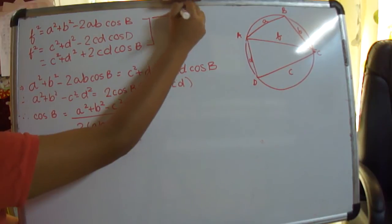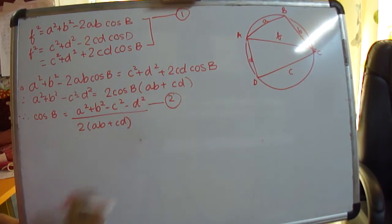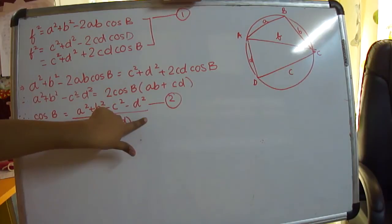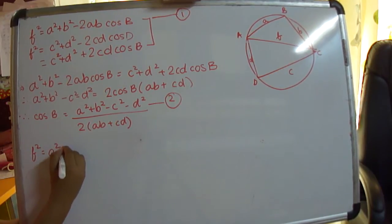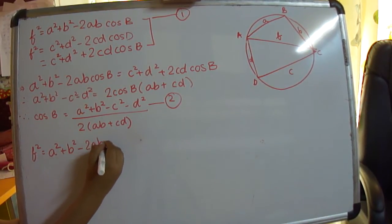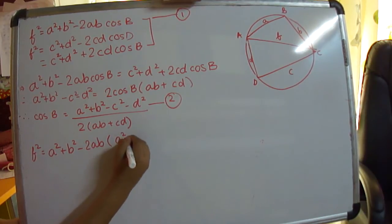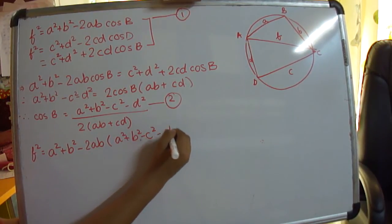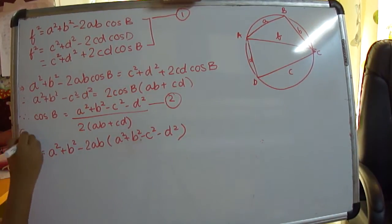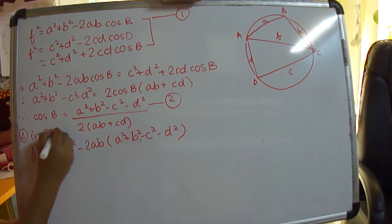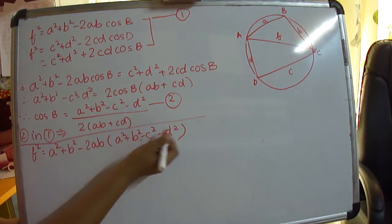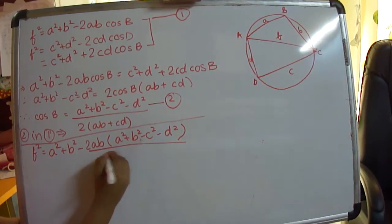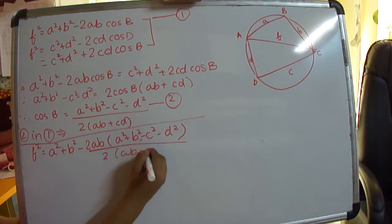Let's call the expression for F² equation 1, and the expression for cos B equation 2. Now I will substitute equation 2 into equation 1. Therefore, I will get F² equal to A² plus B² minus 2AB times (A² plus B² minus C² minus D²) divided by 2(AB plus CD).